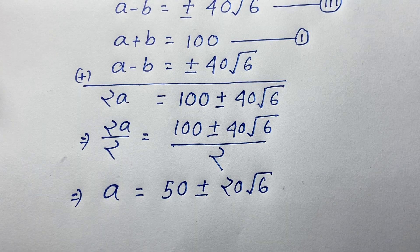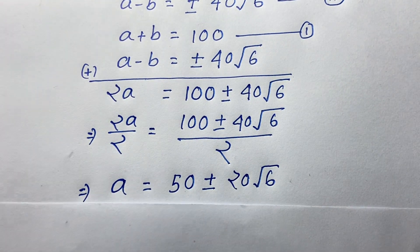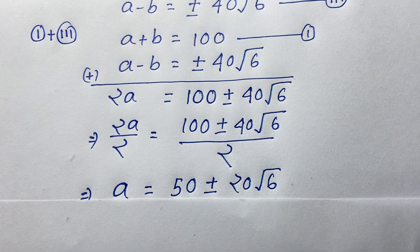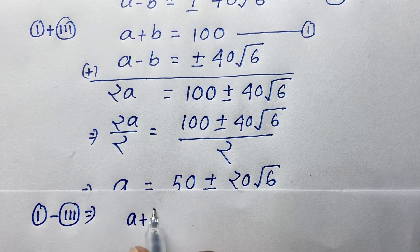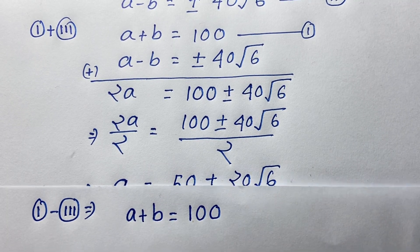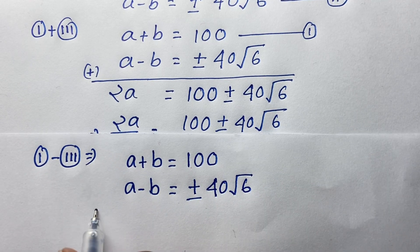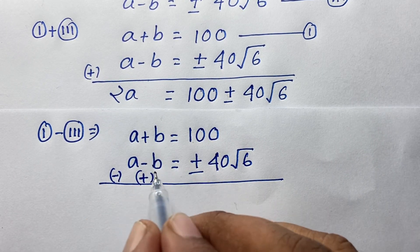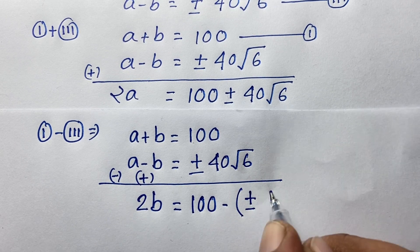So we find a equals 50 plus or minus 20 square root 6. Now for b: subtracting the third equation from the first — a plus b minus (a minus b) — the a terms cancel and we get 2b equals 100 minus (plus or minus 40 square root 6).